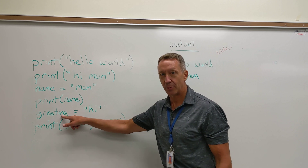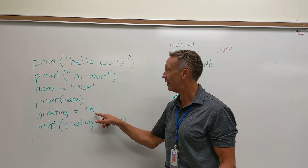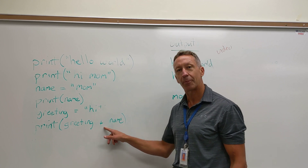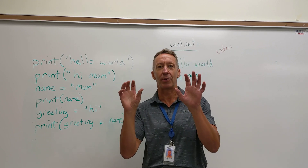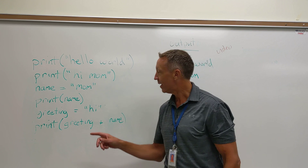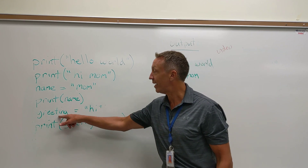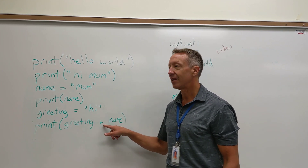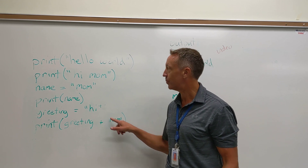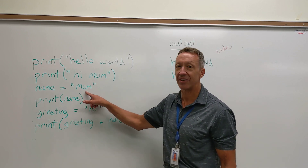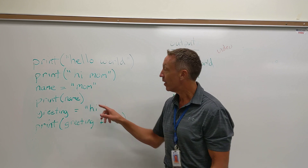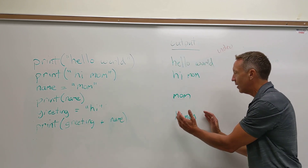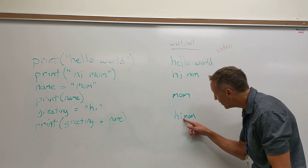This is another variable, greeting, and its value is the word hi. The last line of code that you see uses a plus symbol. Instead of two plus three equals five, here the variable greeting, which is the word hi, being added to the variable name, which was previously set equal to the word mom, causes hi and mom to be joined together, but there's no space.